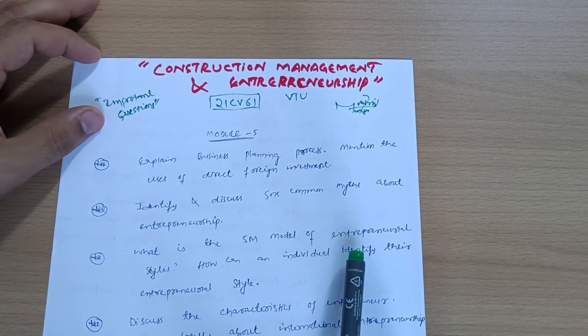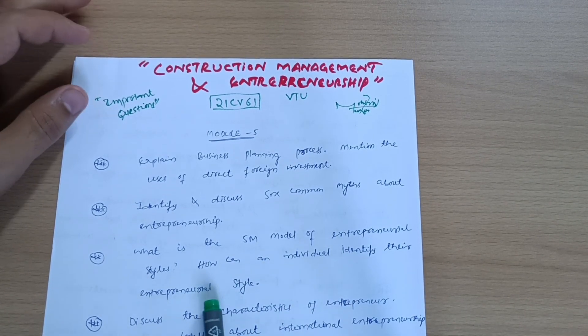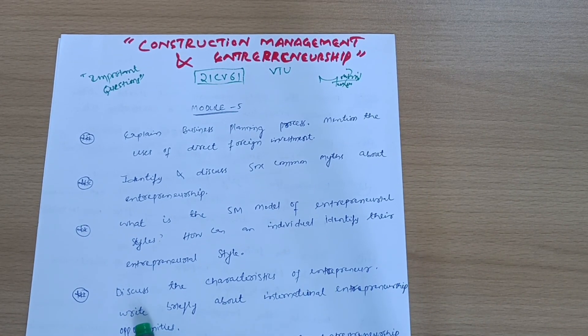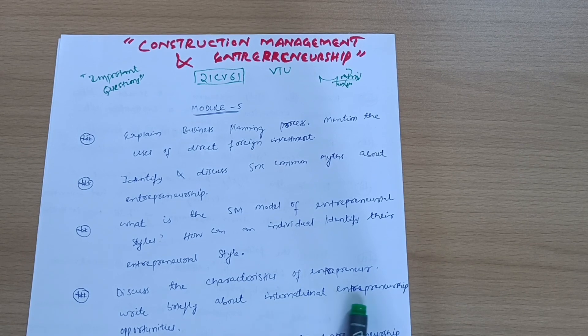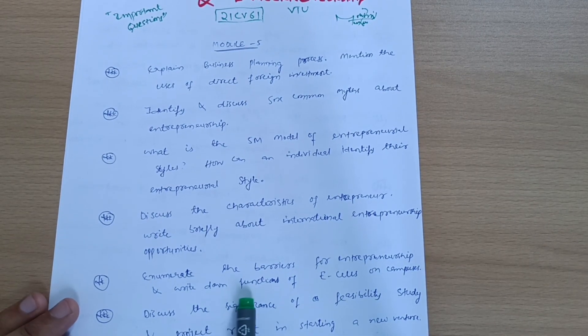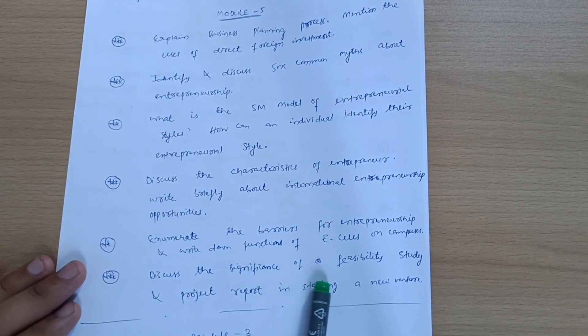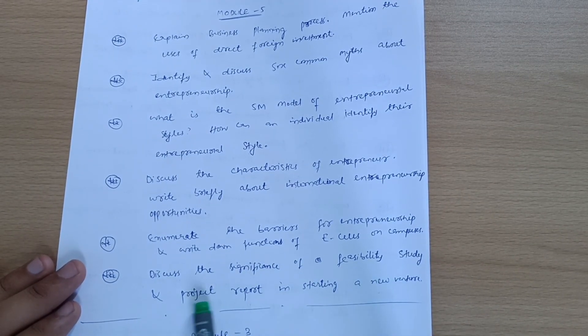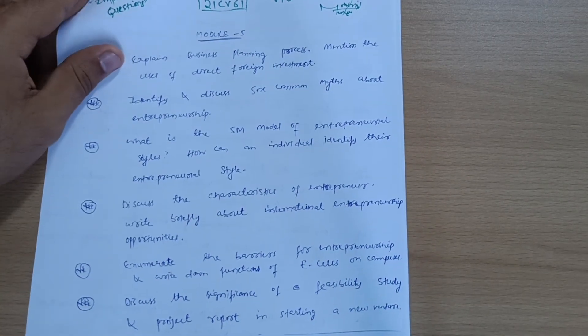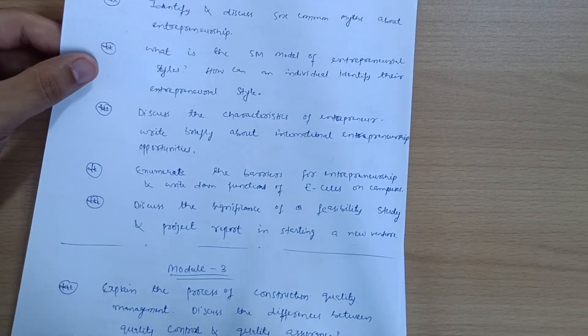Next, discuss the characteristics of entrepreneur. Write briefly about international entrepreneurship opportunities. Enumerate the barriers for entrepreneurship and write down functions of e-cells on campuses. Discuss the significance of feasibility study and project report in starting a new venture. This is all about Module 5. Go through these six important questions to cover the module.